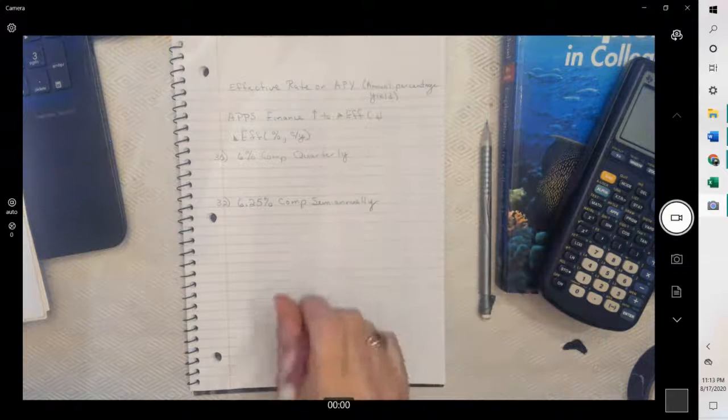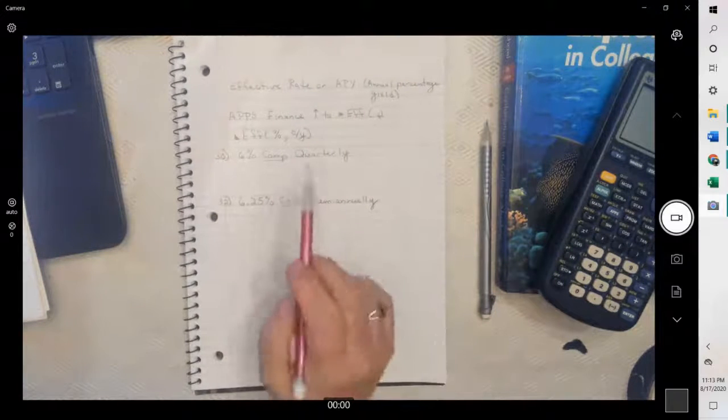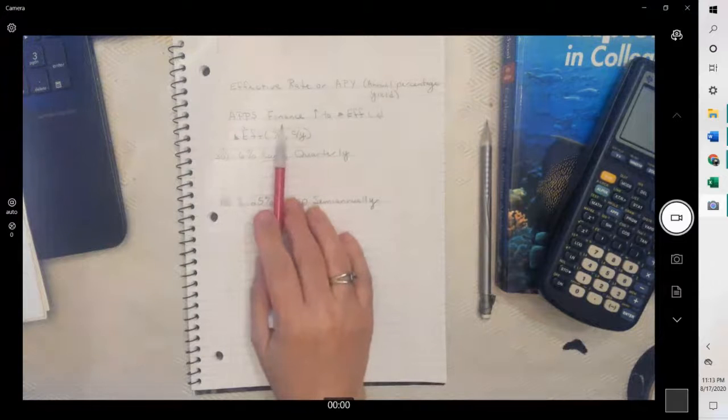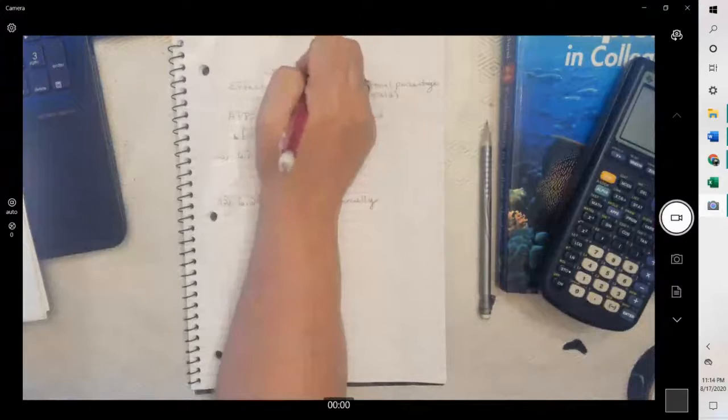Now when it's a compounded amount, then we can use the calculator. When it's continuous, we'll use the formula. But because these are compounded amounts, we can use the calculator.